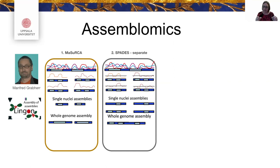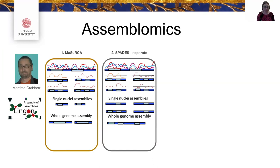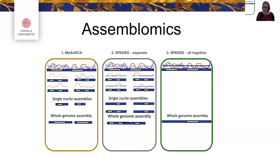Two of our pipelines started by assembling single nuclei and then combining them. In workflow one, we used Masurka to assemble all reads into single nuclei. In workflow two, we used SPAdes but first normalized the reads, assembled single nuclei, and put them together using Lingon, a new assembler-of-assemblies that Manfred developed for this purpose. In workflow three, we simply put all the data together, normalized it, and assembled it with SPAdes, going straight to a whole genome assembly.